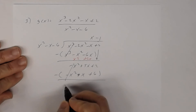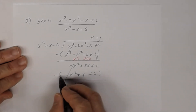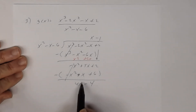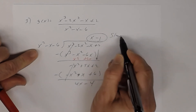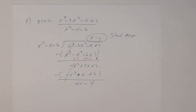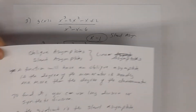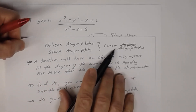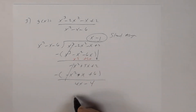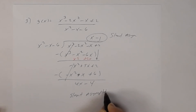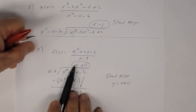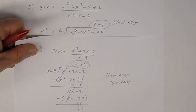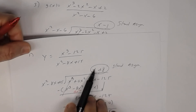Continuing: negative 1 times (x squared minus x minus 6) gives negative x squared plus x plus 6. Subtracting: negative x squared minus negative x squared is 0; 5x minus x is 4x; 2 minus 6 is negative 4. The degree of the remainder is 1 and the degree of the divisor is 2, so we stop. The quotient is the slant asymptote. Since slant asymptotes must be linear, and the quotient x minus 1 is indeed linear, the slant asymptote is y equals x minus 1.